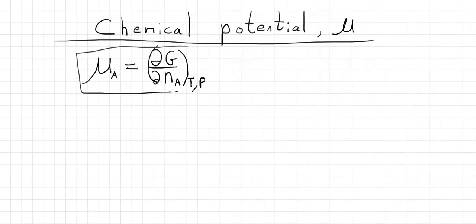So this is a really important definition. So if we increase the amount of A in a system, the chemical potential of A is how much the Gibbs energy goes up when we increase the amount of A.